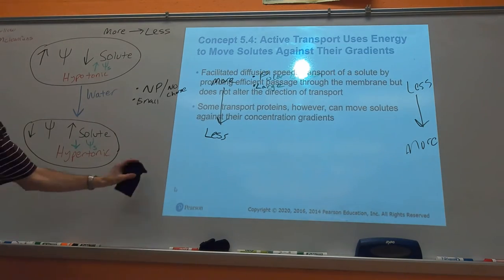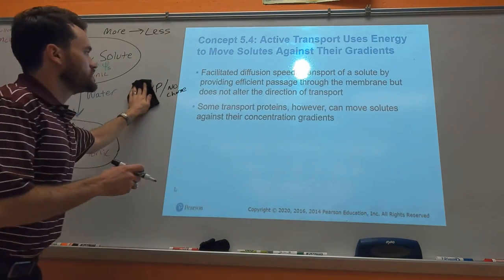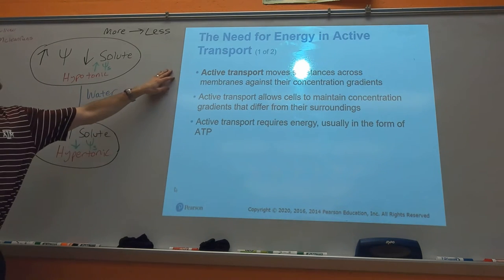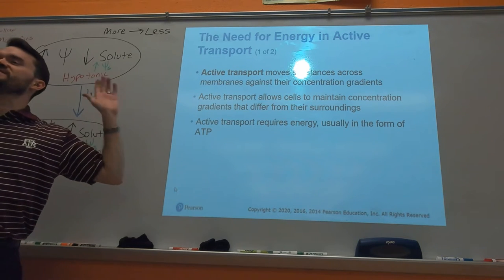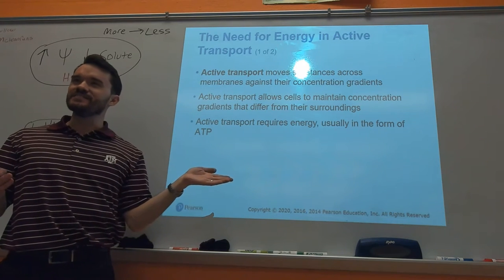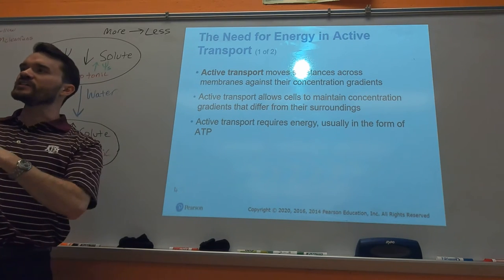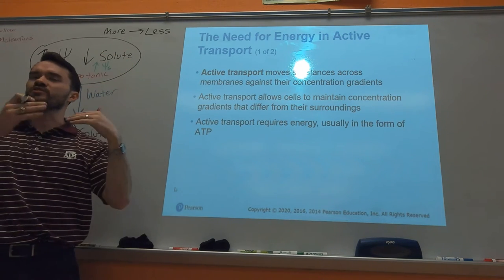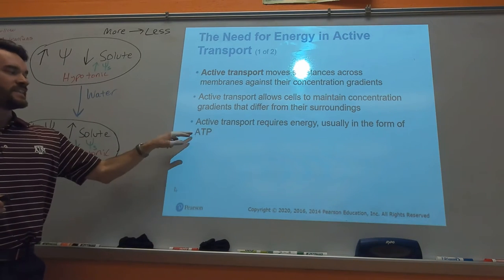So that's like the big picture overview of active transport. Think about it. If cells couldn't do active transport, then the inside of the cell would be the same as the outside of the cell. So that's why active transport is important. It's important that we have the ability to maintain these concentration gradients. And I'll give you a couple examples of how a cell will utilize those gradients.